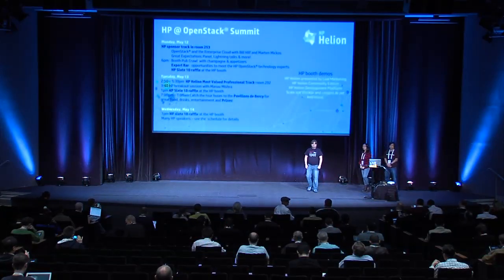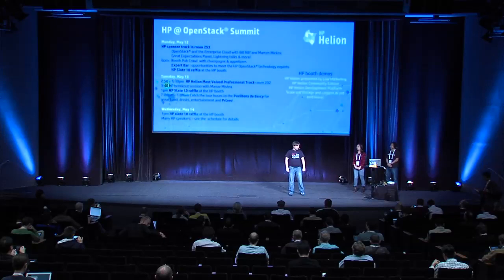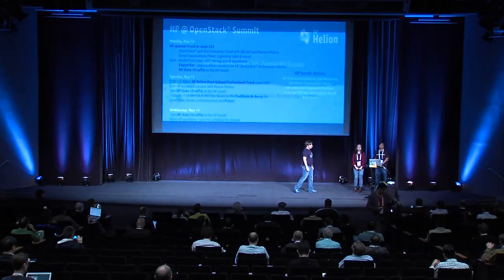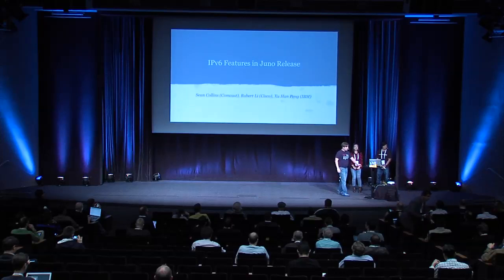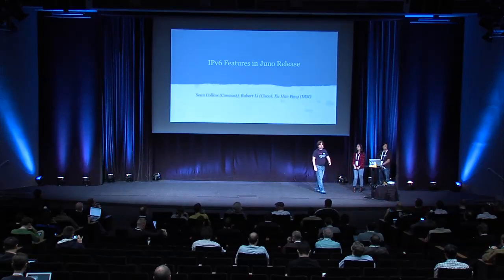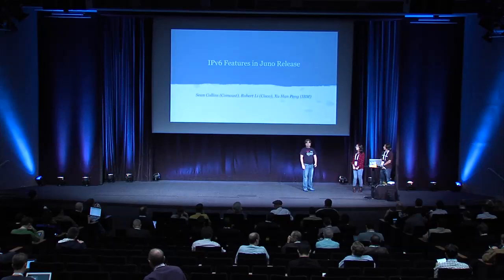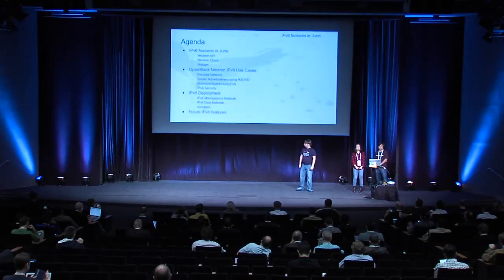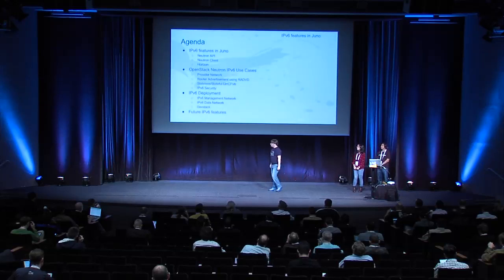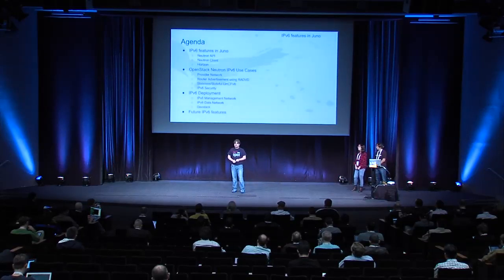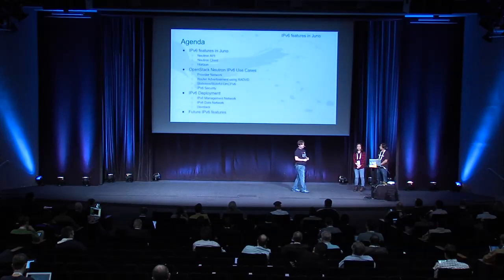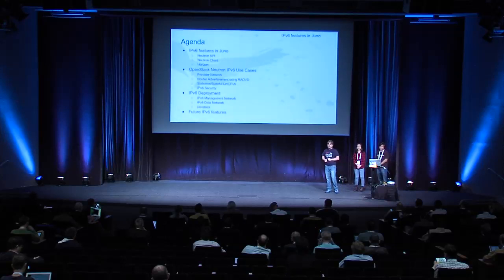Good morning. My name is Sean Collins, and I'm Sean from IBM. And I'm Robert Lee from Cisco. We'd like to welcome you to our presentation about the IPv6 features that we were able to get into the Juno release of Neutron. We have a brief agenda today where we're going to describe the API changes that we made into Neutron, the changes to the Neutron command line client, and also the changes we've added to Horizon from the community.